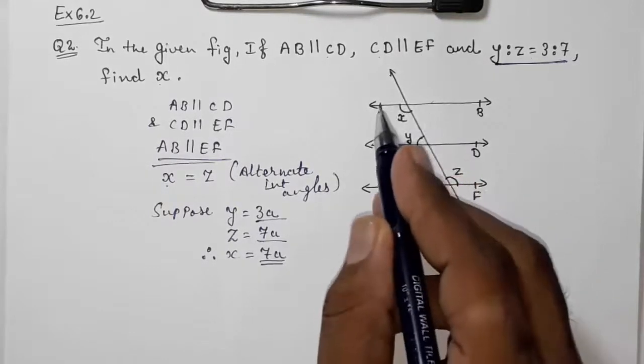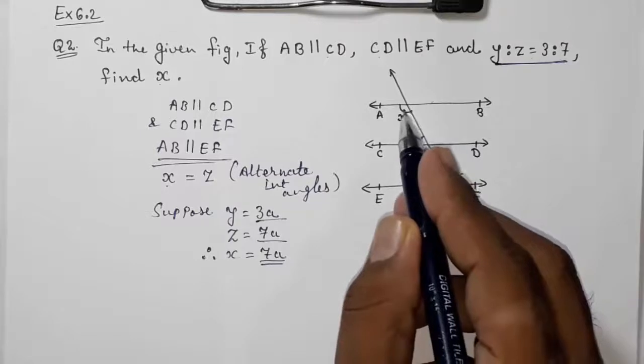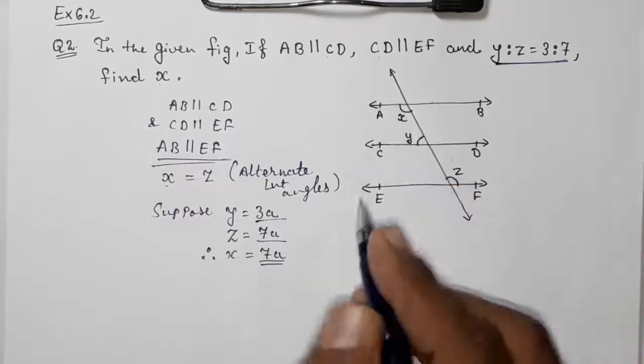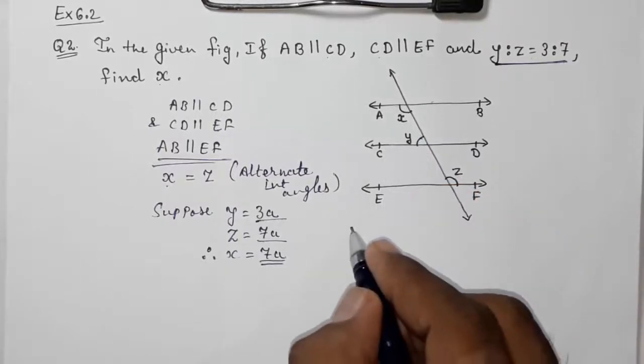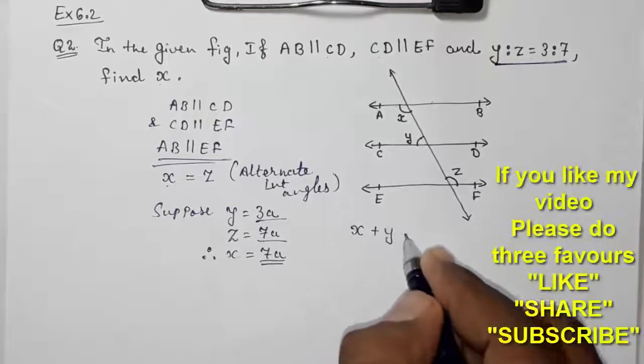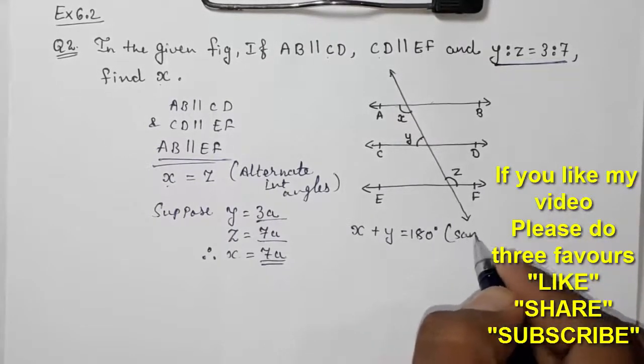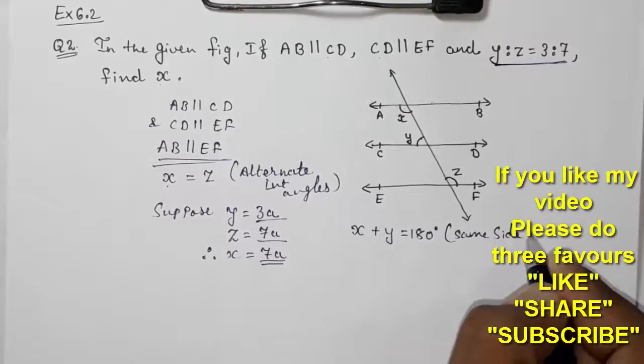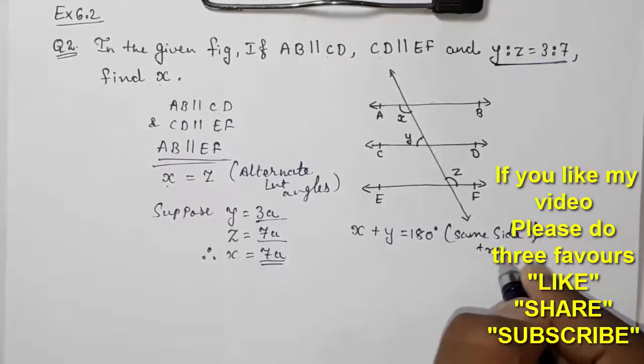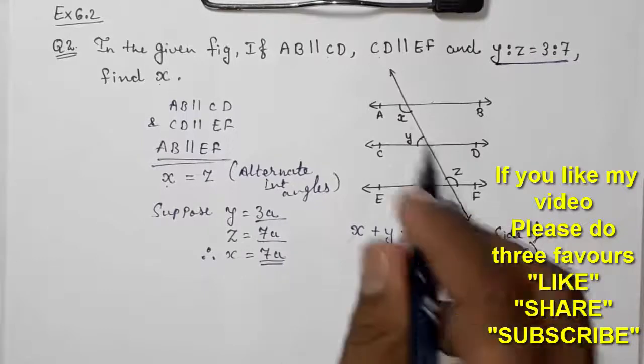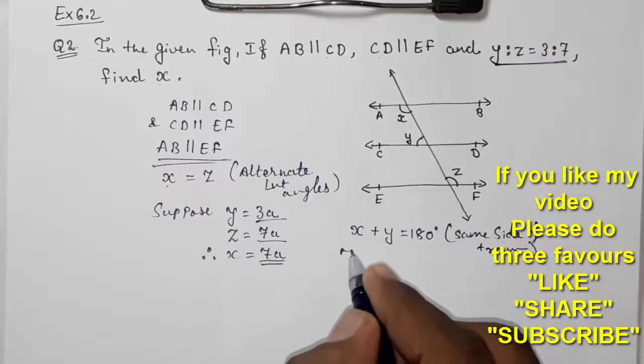These two lines are parallel and these two are forming the same side of transversal, means we can say that X plus Y is equal to 180 degrees by same side of the transversal. If they are making the same side of transversal, sum is 180.